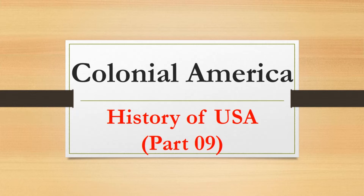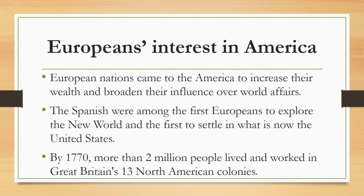Now we will study about the colonies of European countries in America. European nations came to America to increase their wealth and broaden their influence over world affairs. The Spanish were among the first Europeans to explore the New World and the first to settle in what is now the United States. By 1650, however, England had established a dominant presence on the Atlantic coast. By the early 1700s, enslaved Africans made up a growing percentage of the colonial population. By 1770, more than 2 million people lived and worked in Great Britain's 13 North American colonies.